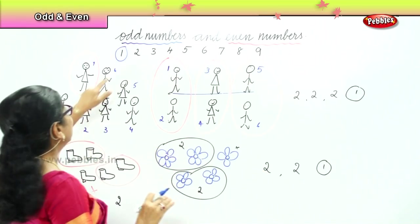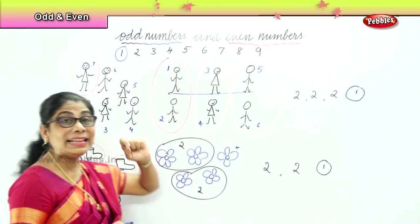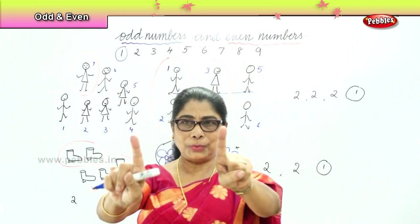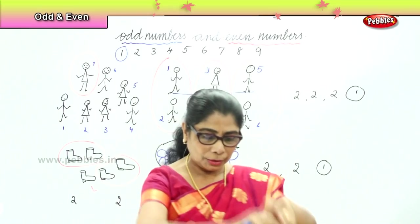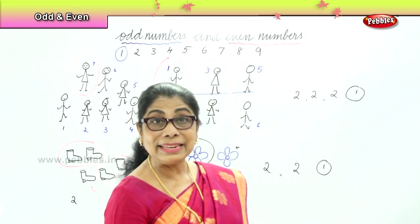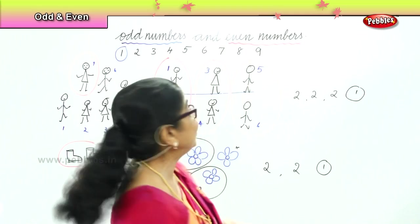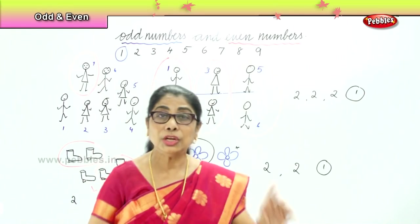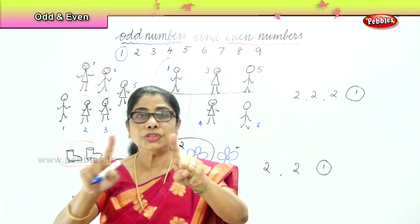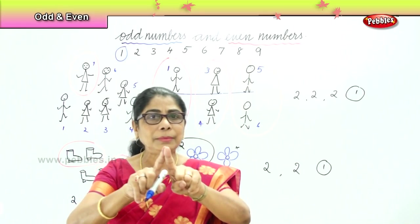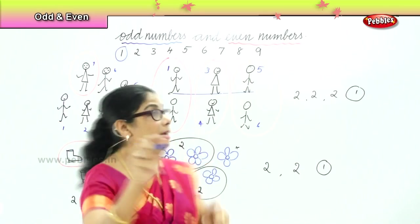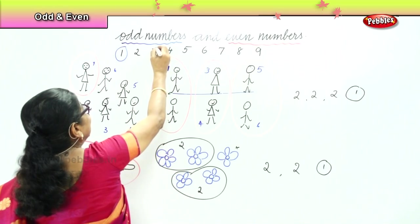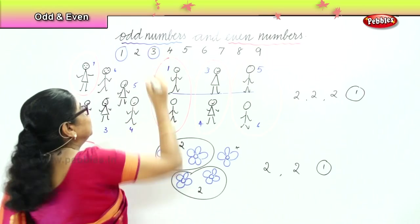Number two has a partner: one plus one equals two. One and one — two. And we say that is an even number. Now three — one and one joined together becomes two, and again one is out. So we say number three is an odd number.